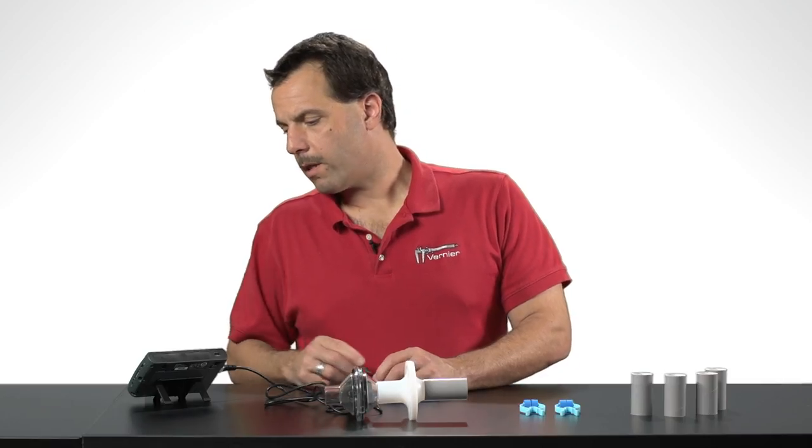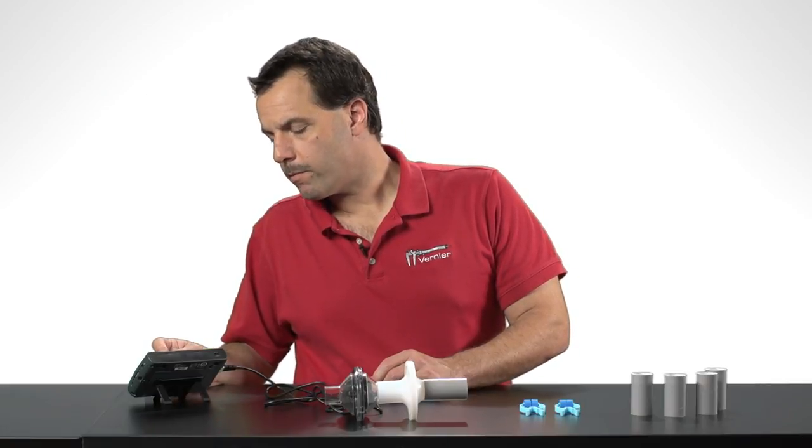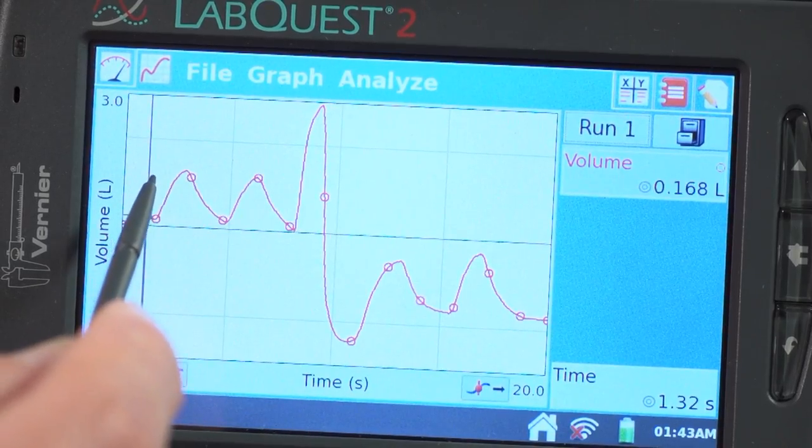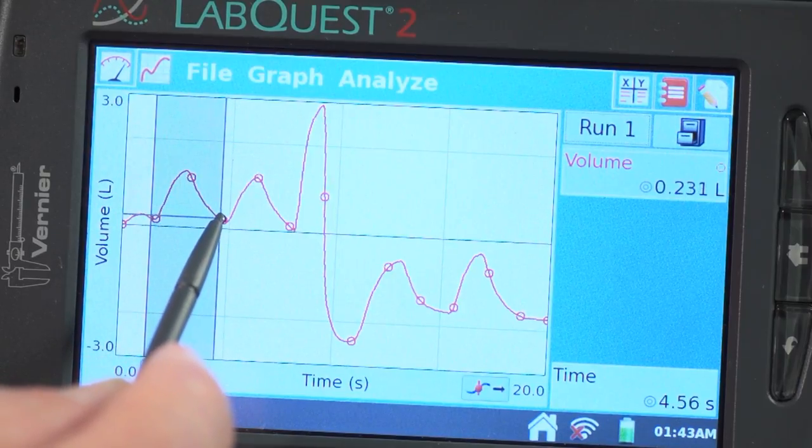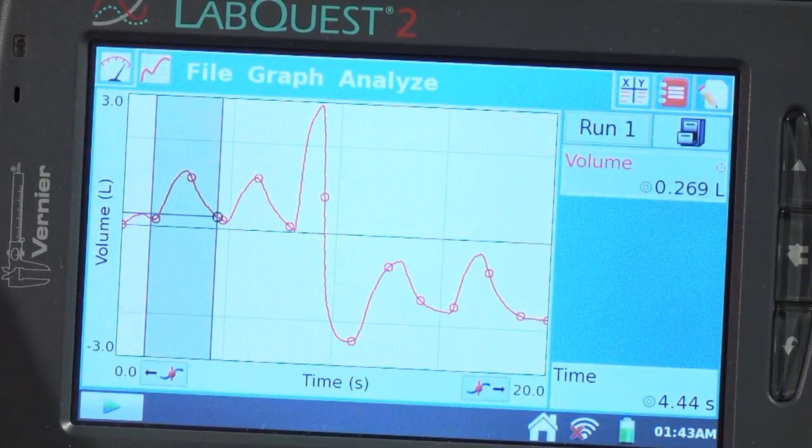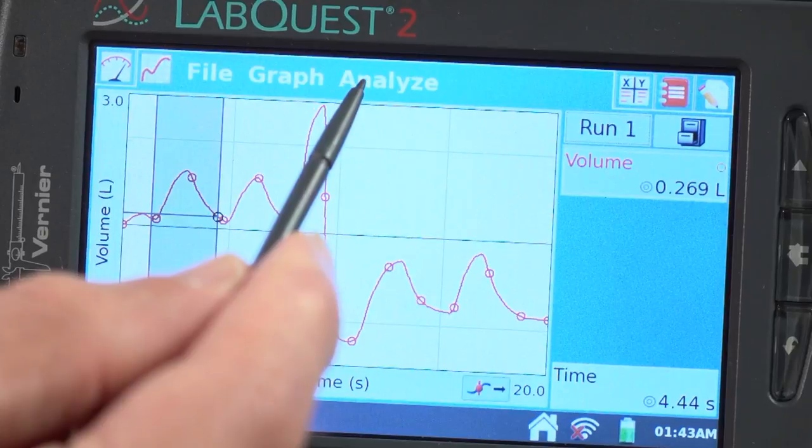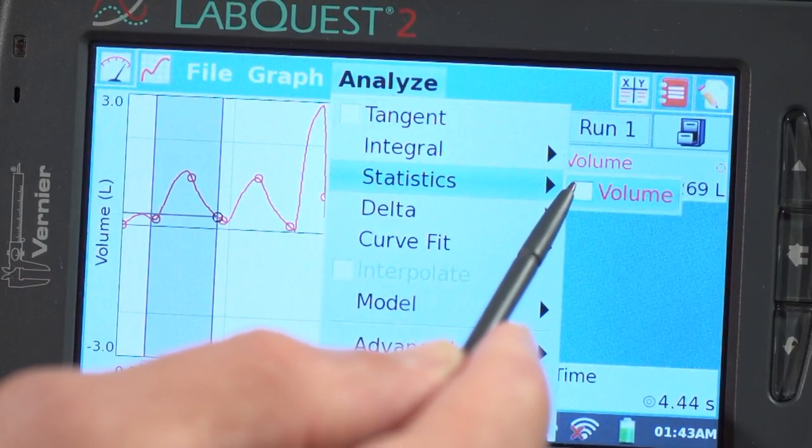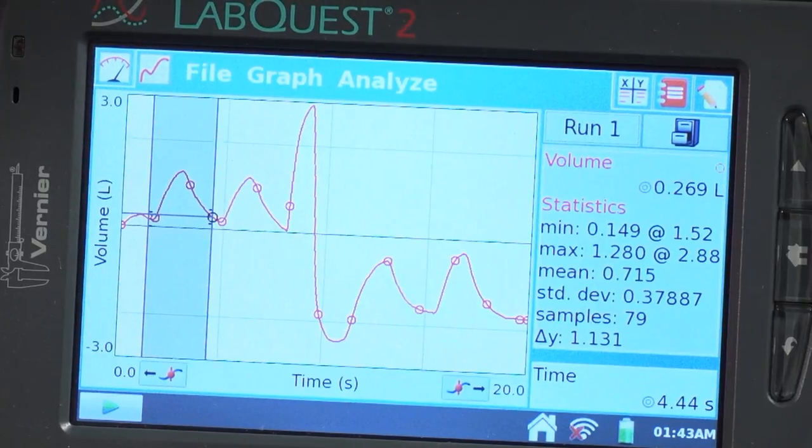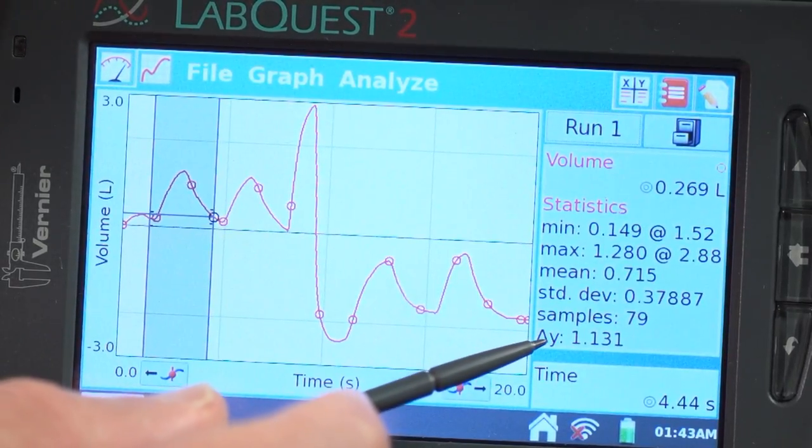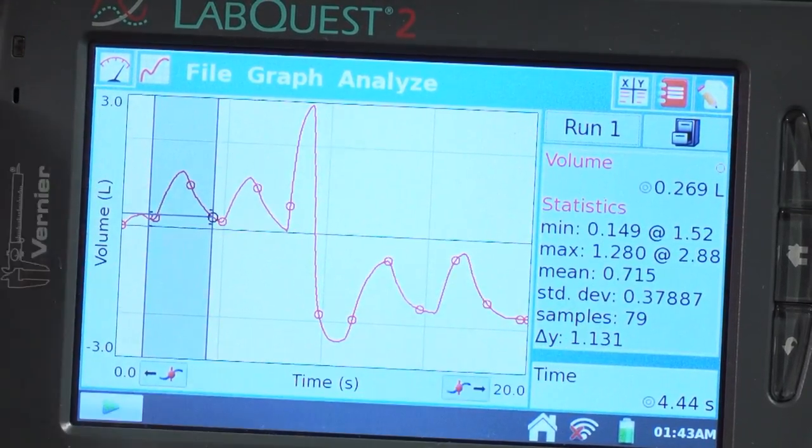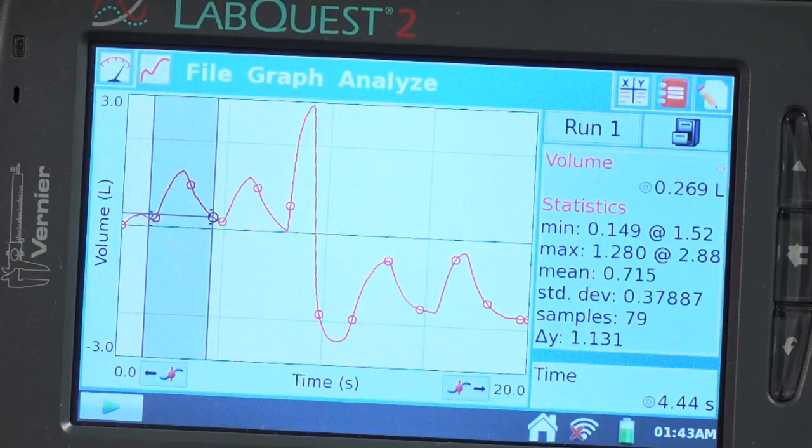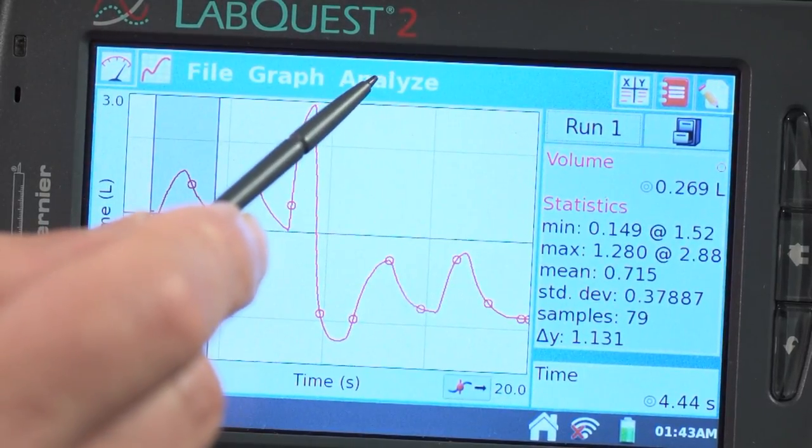Alright, so now that I've done the baseline adjustment, let's just calculate some tidal volumes here. So I can select a region here. That's one tidal volume. And let's go to Analyze and go to Statistics. Select Volume. And you can see right here the delta Y, that's about 1.131 liters.